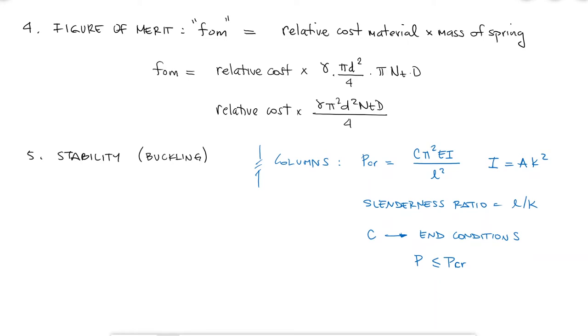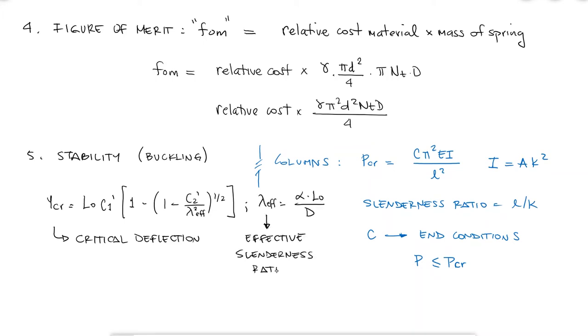In the case of the springs, we look at the deflection, as for when the deflection becomes too large, the spring can buckle. The effective slenderness ratio in this case is alpha times the free length over D, where alpha takes the place of the end condition value that used C for columns, and L0 is the free length of the spring.